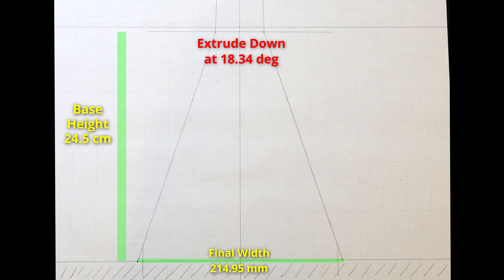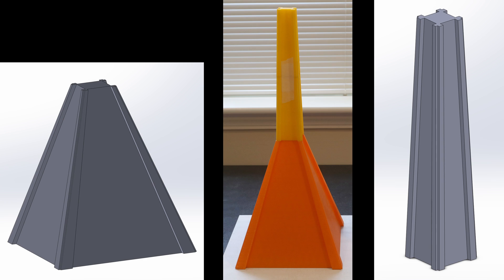and I wound up settling on an angle of 18.34 degrees. The final width of the base turned out to be 214.95 millimeters, which gives a total buffer of 9.85 millimeters, or nearly 5 millimeters per leg.